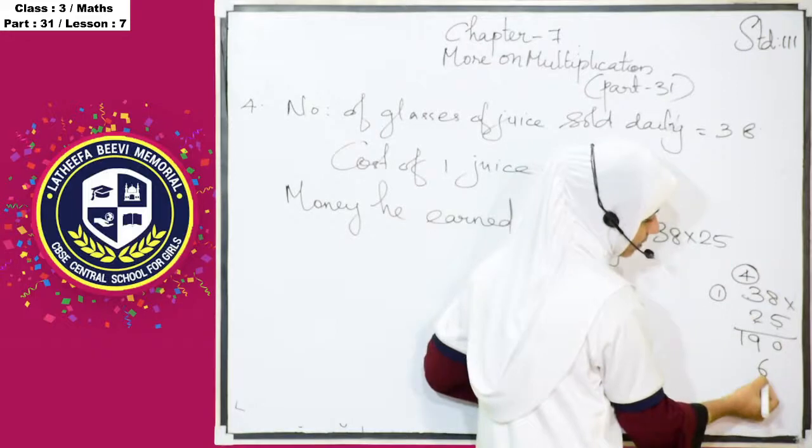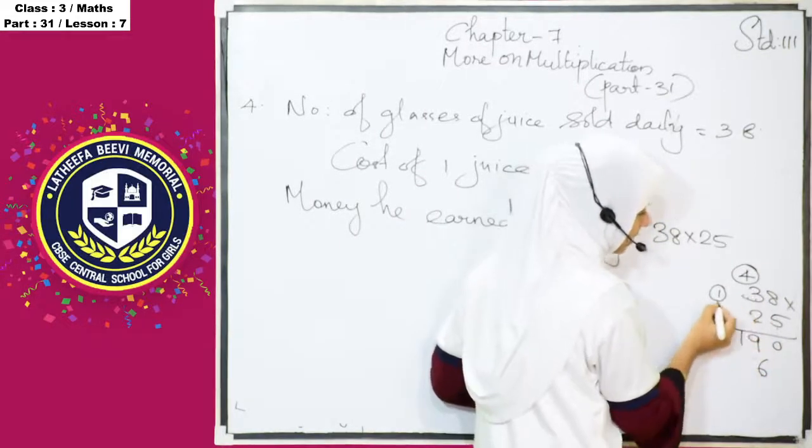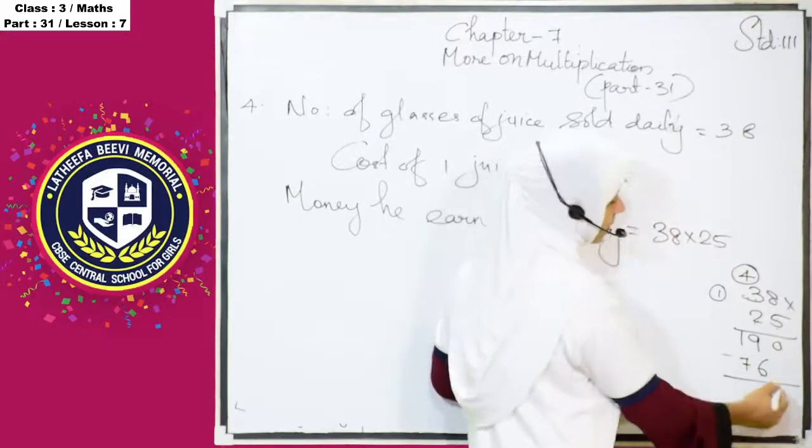2, 8's are 16, we wrote 6 here, 1 is again carry over. 2, 3's are 6 and plus 1, it is 7. This place is 7.